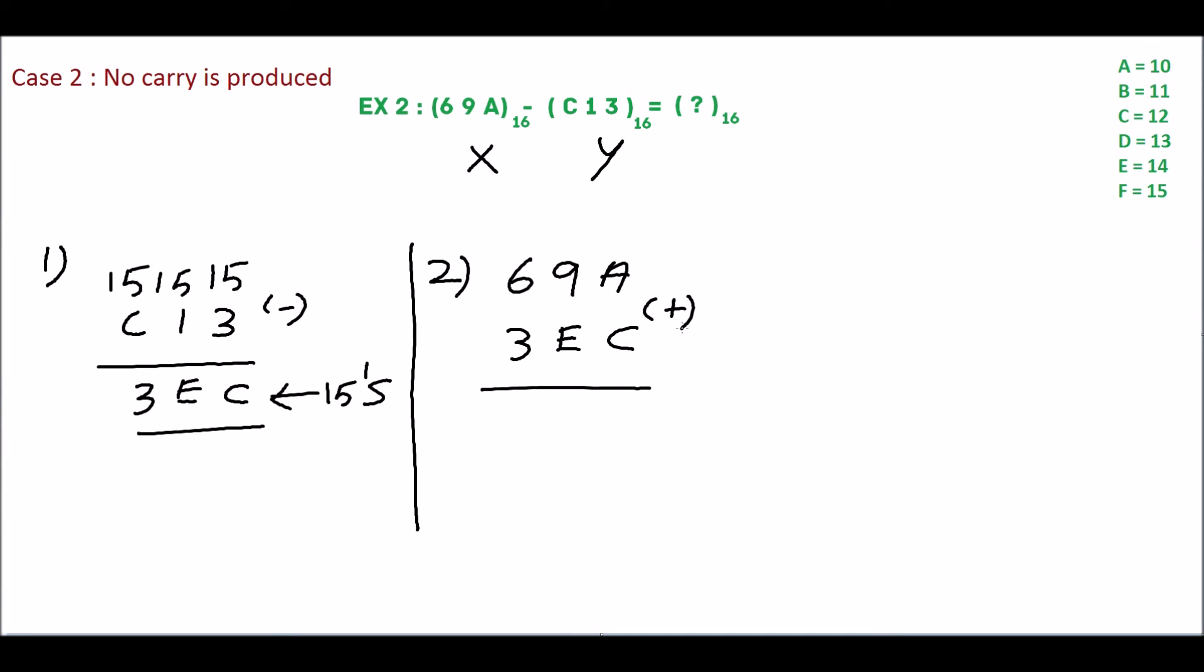A is equivalent of 10 and C is equivalent of 12. 10 plus 12 is 22. 22 is not a hexadecimal number. We will convert this. The quotient is 1 and the remainder is 6.